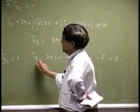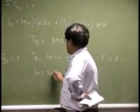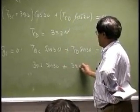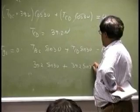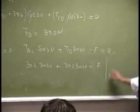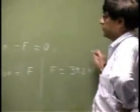So out of this, you know this one here is 39.2 sine 30 and TCD is the same as 39.2 sine 30 and that equals F. Or F would simply be 39.2 newtons.